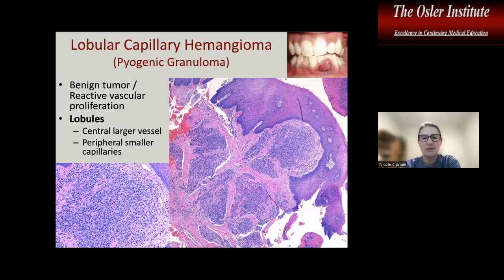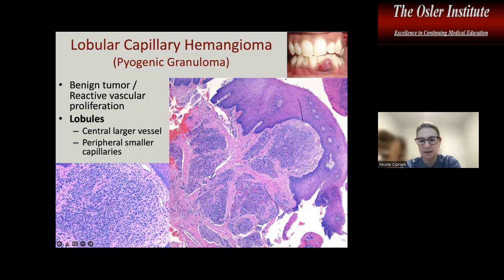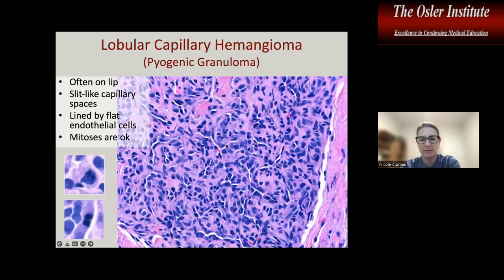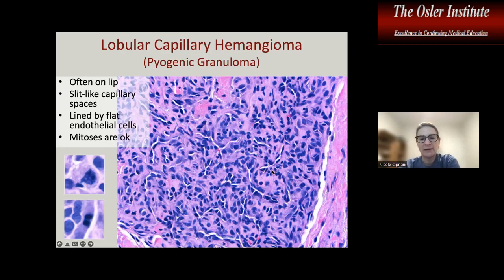Lobular capillary hemangioma, or pyogenic granuloma, is a benign reactive proliferation of vessels that grows in lobules underneath the surface epithelium. The surface may or may not be ulcerated. On low power, capillaries present in lobules with slit-like feeder vessels; on higher power, lesional cells are clearly vascular spaces. The presence of mitotic figures is acceptable as long as they are not atypical and the lobular architecture is retained.